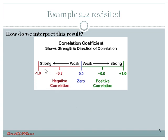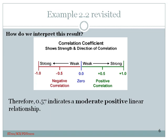If the value is very close to negative one — for example, negative 0.9 or negative 0.85 — we say it is a strong negative correlation. Similarly, if the value is close to positive one, it is a strong positive correlation. If the values are close to zero from either the negative or positive side, they indicate weak correlations. If the values are close to negative 0.5 or positive 0.5, depending on the sign, they are moderately correlated. Therefore, our answer of 0.57 indicates a moderate positive linear relationship. Remember, the correlation coefficient measures only linear association.